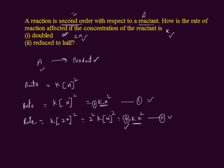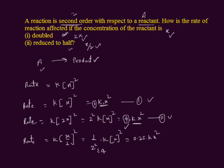The second part of the question asks: what if the concentration of reactant is reduced to half? The initial concentration is x, and if reduced to half it becomes x divided by 2. Using the rate law: rate equals k times (x/2) squared. Taking 1/2 out of the bracket gives (1/2) squared times kx squared, which is 1/4 times kx squared, equal to 0.25kx squared. We label this equation 3. Comparing equation 1 with equation 3, the rate of reaction is reduced to 0.25 times when the concentration is halved.